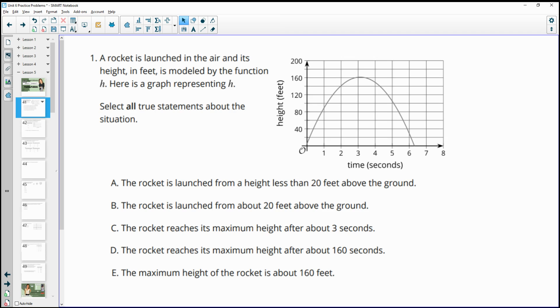Number one tells us that we have a rocket that's launched in the air, and its height in feet is modeled by the function H, which is graphed here for us. Select all true statements about the situation. A says that the rocket is launched from a height less than 20 feet above the ground. So the height is our vertical axis here. We're counting by 20s, so 20, 40, 60, 80. This line right here is 20 feet, and we can see that our graph starts below that. So this one is true.